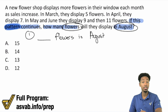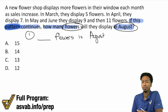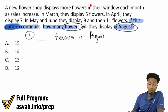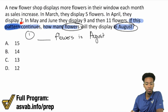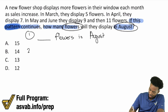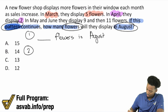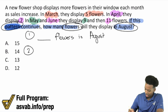Now do I know what the pattern is yet? Do I know what's going on? Kinda. We're dealing with flowers, we're dealing with August. That's pretty much what I know so far, and there might be a pattern here. So let's go ahead and read the information. A new flower shop displays more flowers in their window each month as sales increase. So in March, they display five. In April, they displayed seven. In May and June, they display nine and eleven flowers.